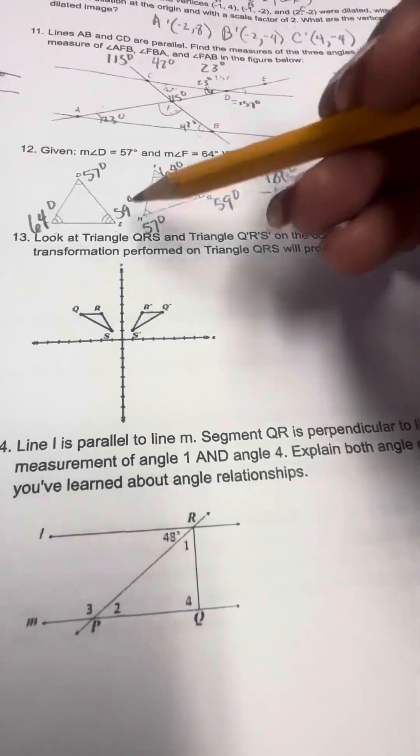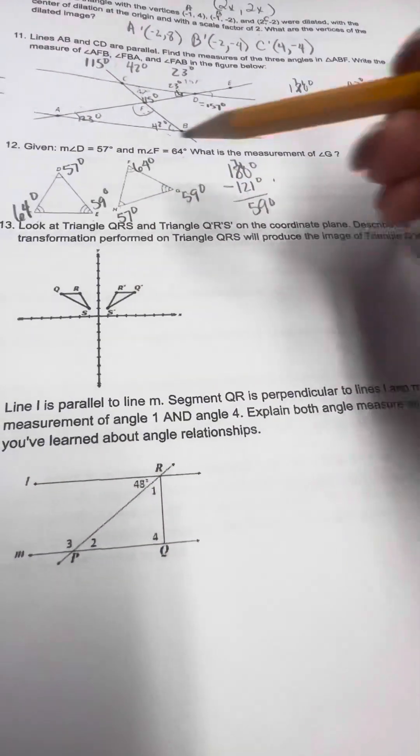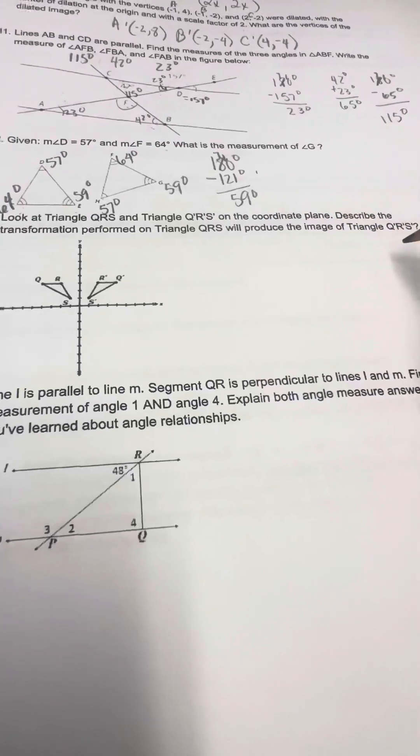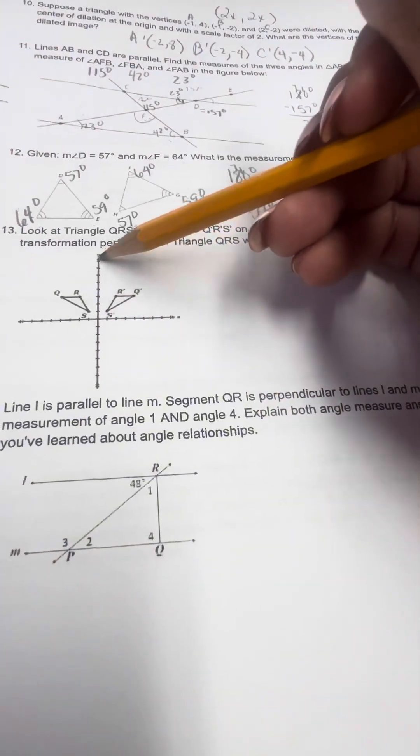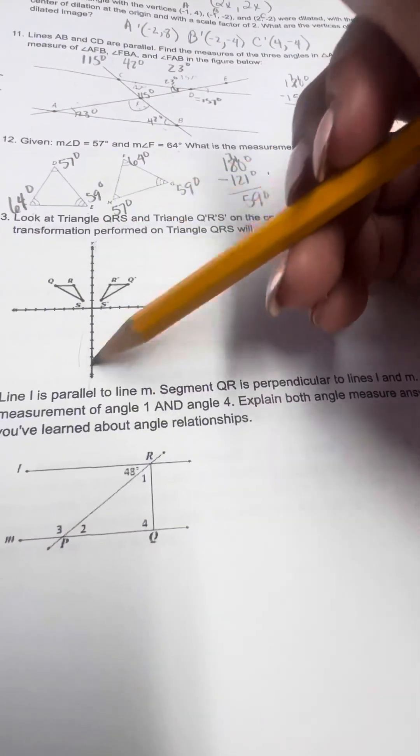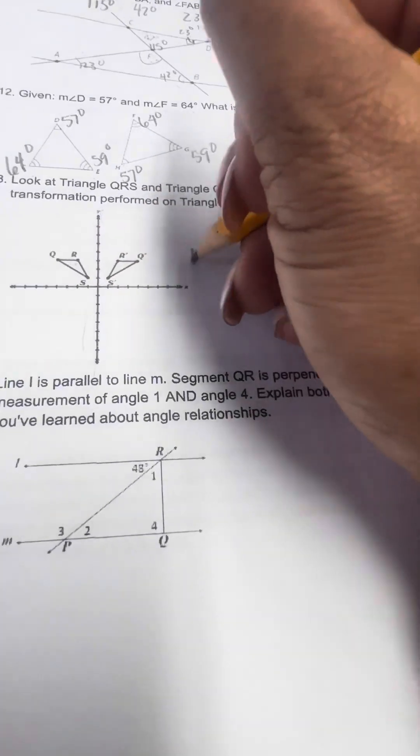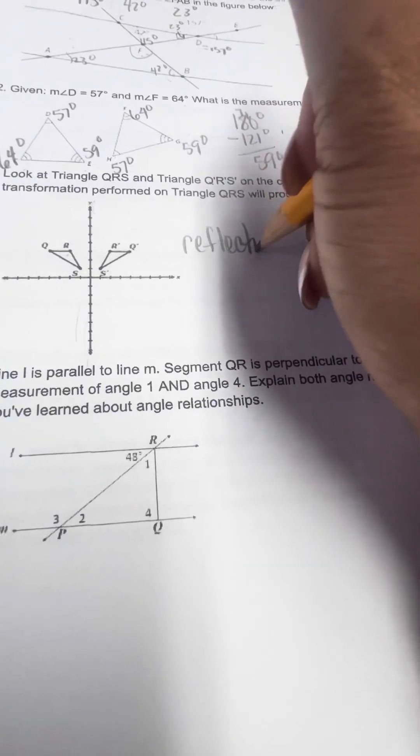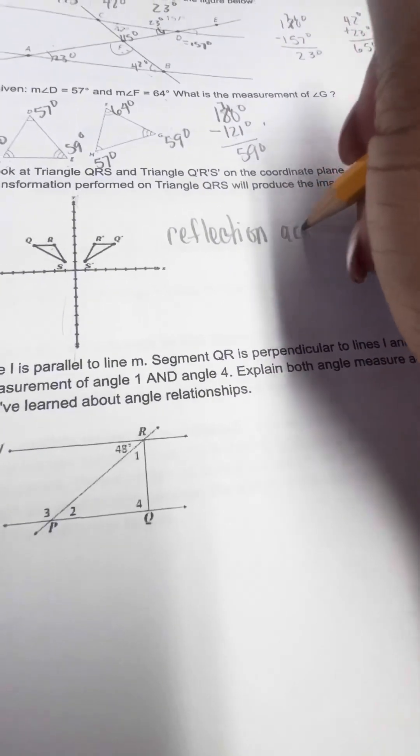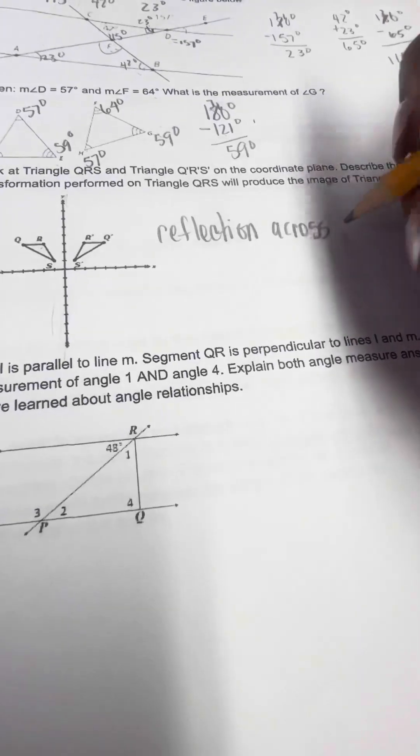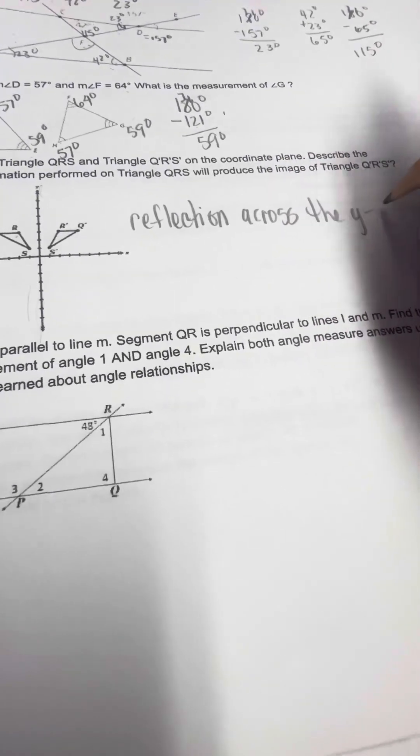Number 13 is look at the triangle, describe the transformation that will produce the image. Here, I have the y-axis. It's reflecting across the y-axis. So this is a reflection across the y-axis.